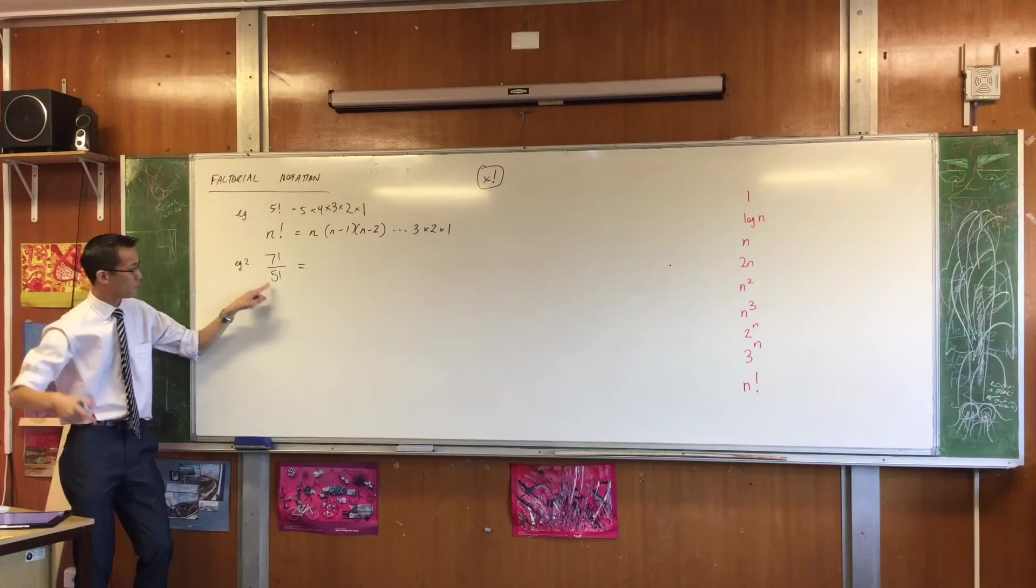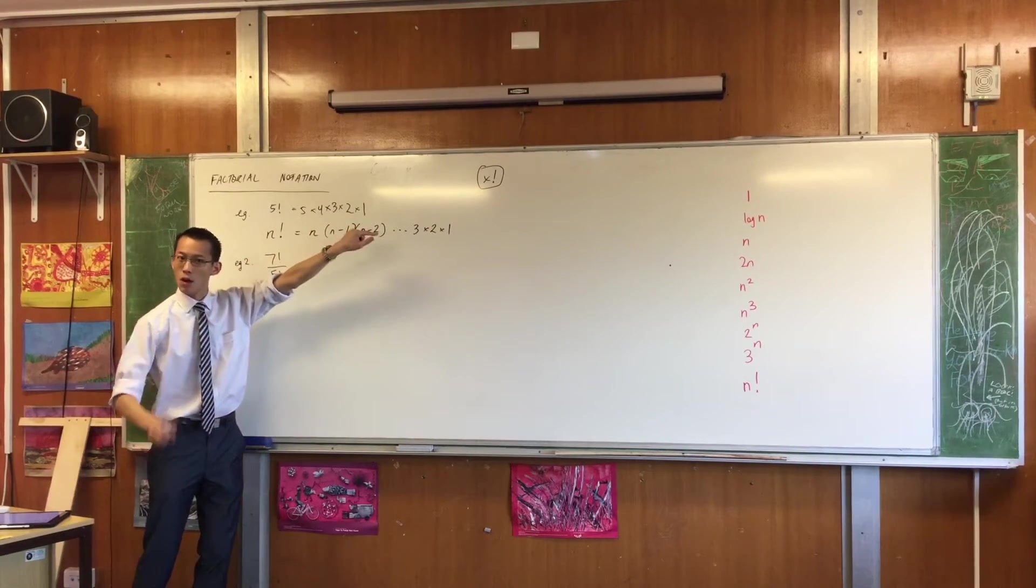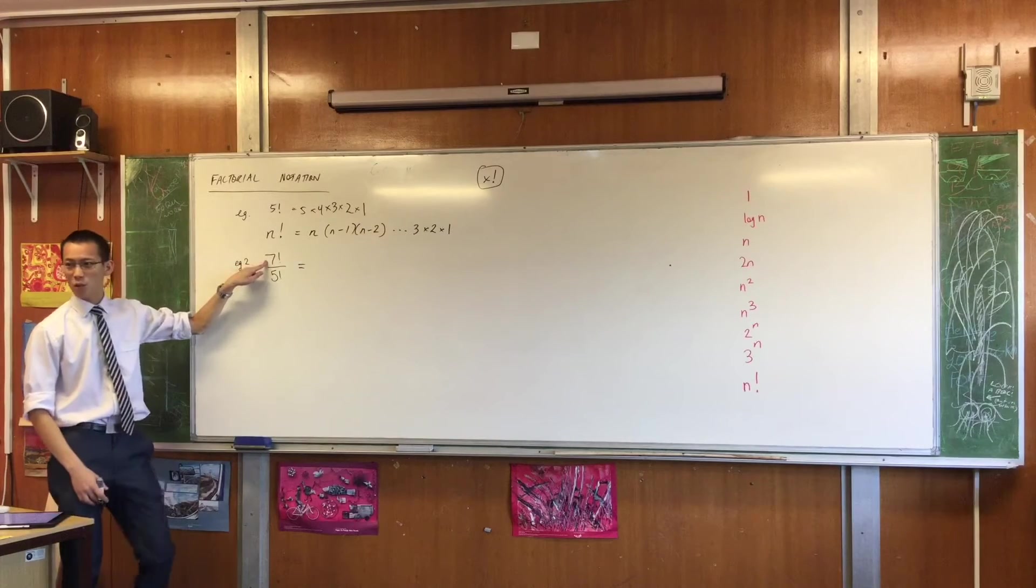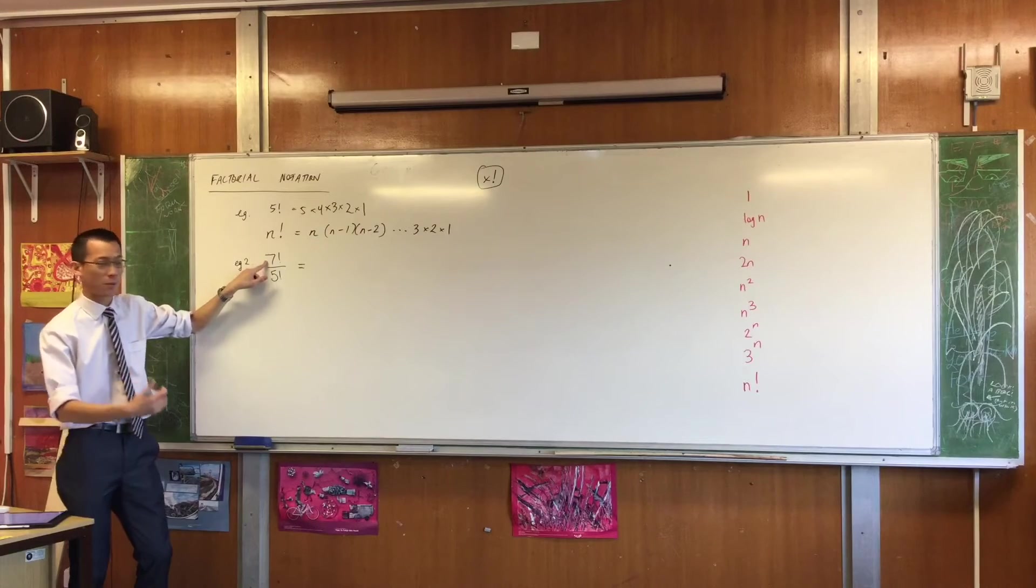Okay, so rewind a little bit. We defined 5 factorial in the way that Morgan just described. 5, 4, 3, 2, 1. Well, that 5, 4, 3, 2, 1 is also tucked away in this term, isn't it? Right? Let's write some working that helps us understand that.